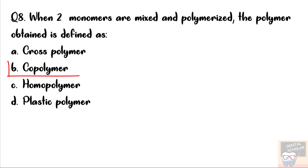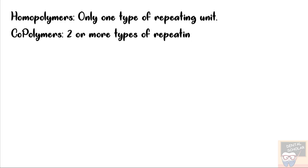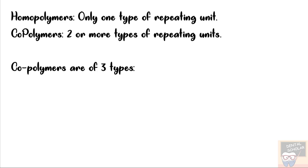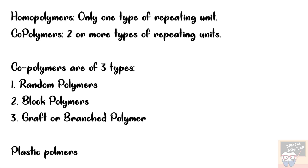The answer to this question is option B, copolymer. Homopolymers only have one type of repeating unit, i.e. a single type of monomer, while copolymers are polymers that have two or more types of repeating units. Copolymers are of three types: random polymers, block polymers, and graft or branched polymers. Plastic polymers are those polymers that have moldable property.